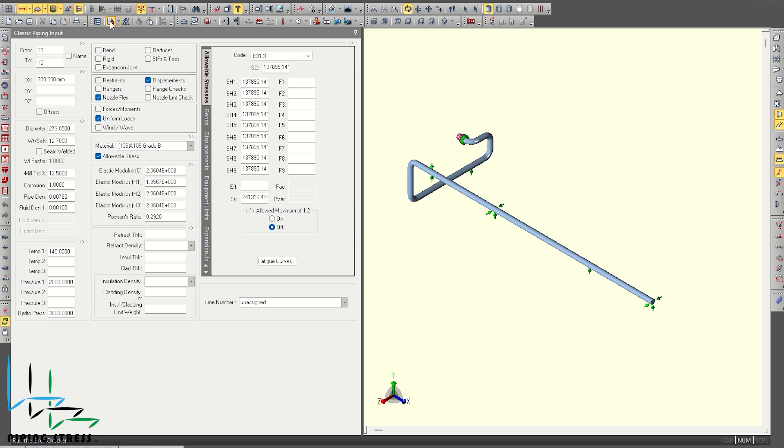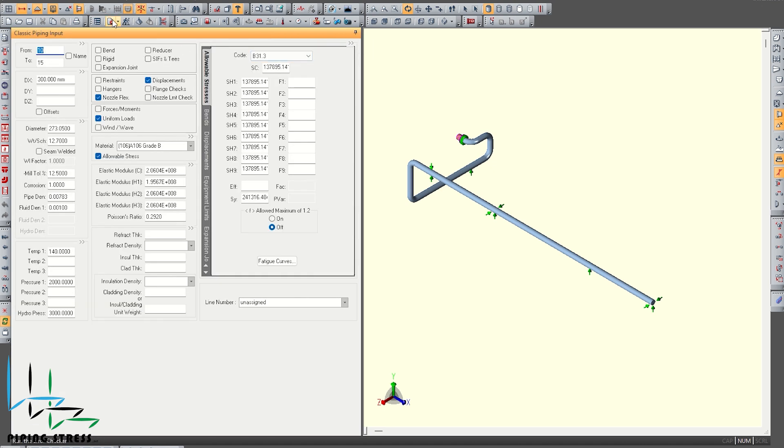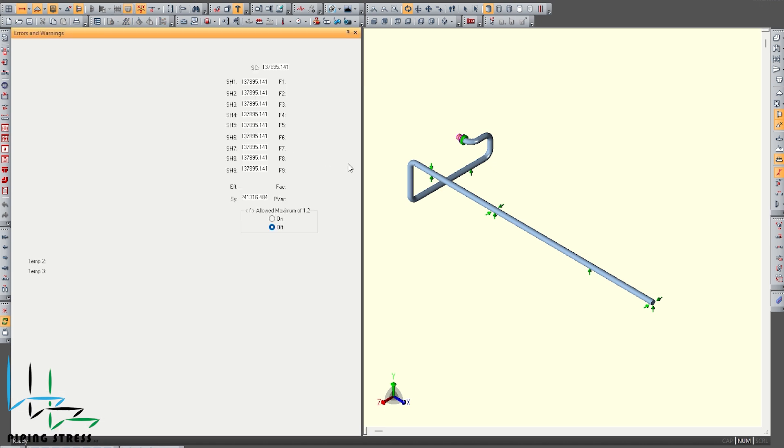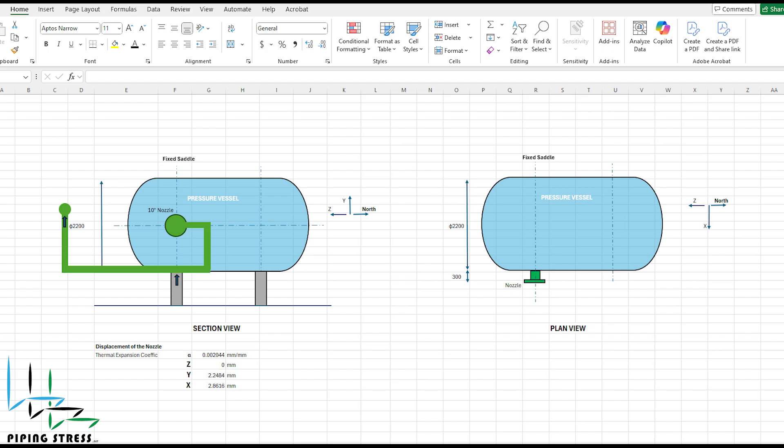When we run this analysis, we observe that the moments and forces on the nozzle are below the allowable limits. However, we also notice that the first support is subjected to slightly higher vertical loads than usual. This is due to the interaction between the nozzle and the support.